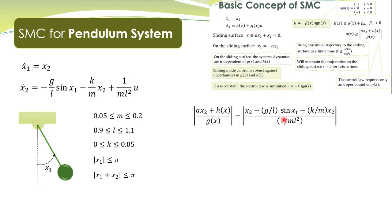We can further rearrange this expression to write it over here. We have simply multiplied both the numerator and denominator with ml². So we have ml²x₂, mgl sine(x₁), and kl².